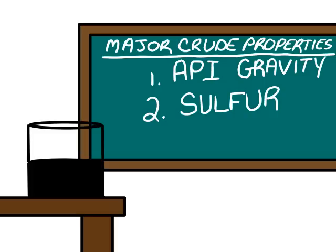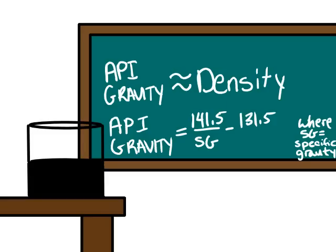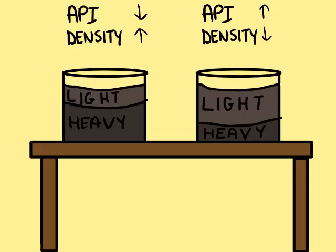Crude oil quality differs from reservoir to reservoir. Petroleum and process engineers classify crudes primarily based on two properties: API gravity and sulfur content. API gravity is a measure of the density of the crude. The lower the API gravity, the higher the density of the crude. Lower API gravity crudes have a greater portion of larger molecules versus smaller molecules in their mixture.